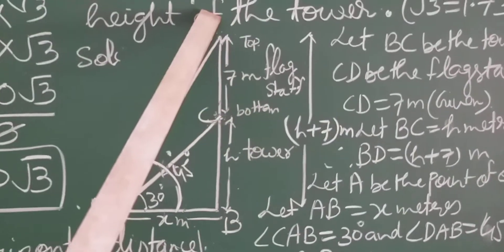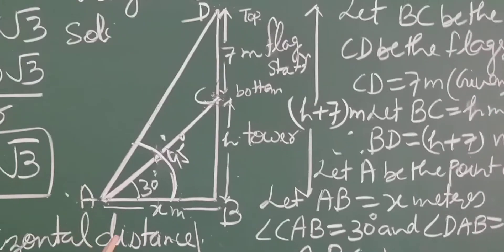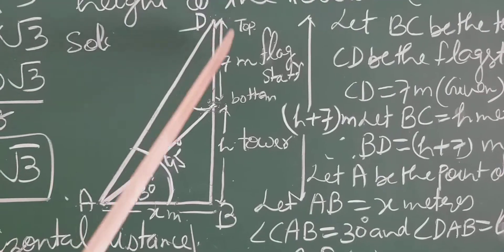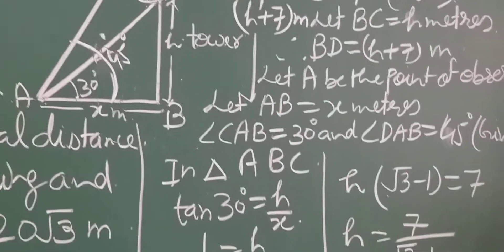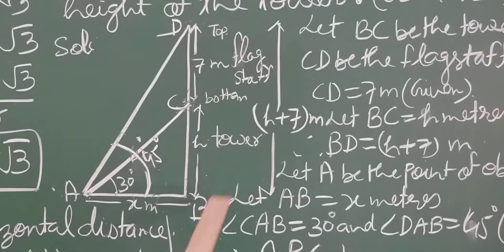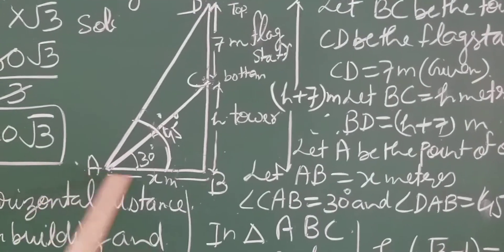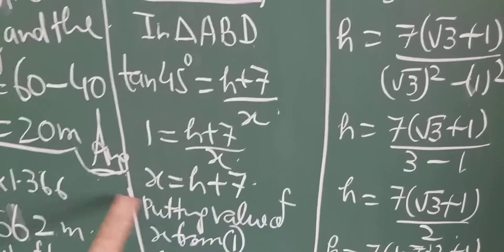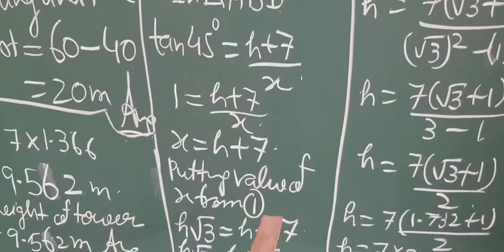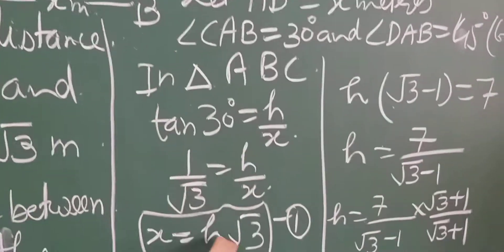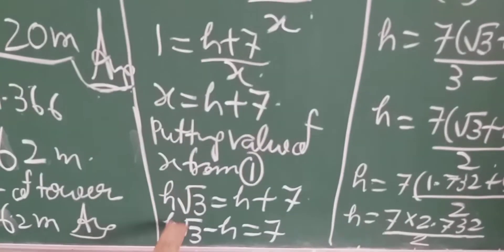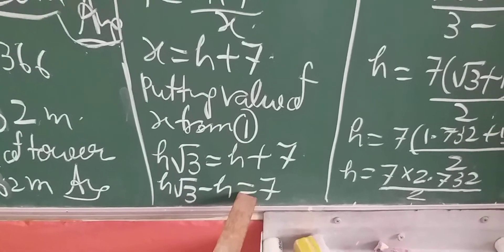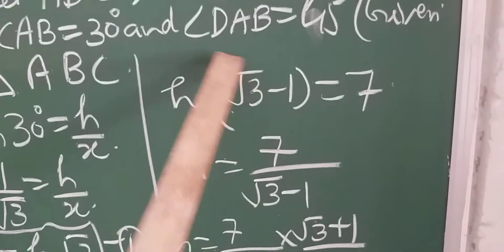Now in triangle ABD — remember we have to take a right angle triangle, so we take triangle ABD with angle B equal to 90 degree. Don't take triangle ACD because there is no angle of 90 degree. tan45° equals perpendicular upon base, perpendicular is h plus 7 — the whole height — and base is x. So tan45° equals h plus 7 upon x. The value of tan45° is 1. By cross multiplication, x equals h plus 7.